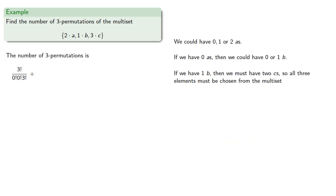If we have 1 b, then we must have 2 c's, so all three elements must be chosen from the multiset with still 0 a's, 1 b, and 2 c's. And we can do this in 3 factorial over 1 factorial times 2 factorial ways. Now since we only have 1 b in our set, we can't have 2 b's, so the next step might be to consider if we have 1 a.